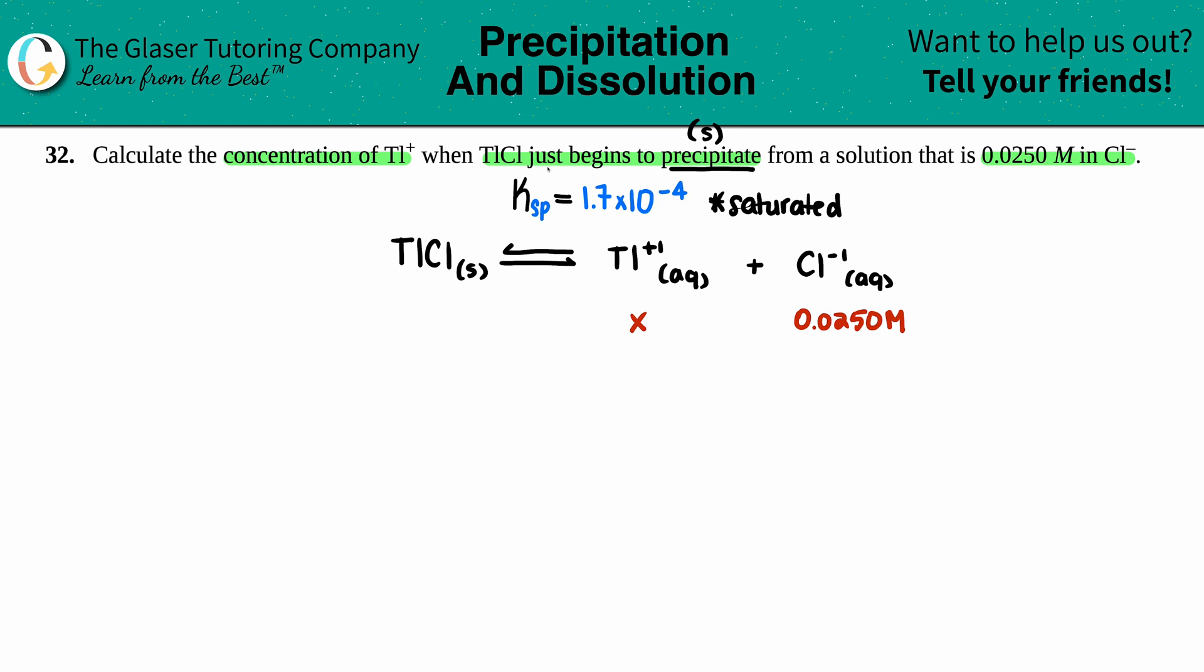Now I can use my Ksp equation to find out what the TI+ concentration is. Remember, the Ksp equation is just equal to the products raised to the power of their coefficients.